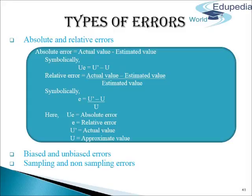Relative Error can also be represented as a percentage: (3/500) × 100 = 0.6%. Relative Error is generally used in statistical calculations because absolute error can give wrong or misleading results.